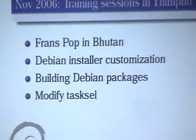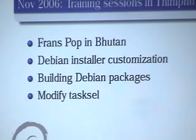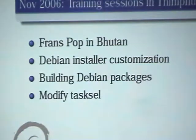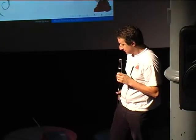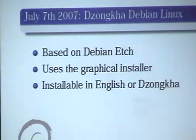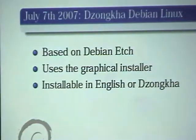After some talks during the launch, training sessions happened in Thimphu, the capital city. Frans Pop was invited to stay for two weeks in Bhutan and give training sessions about D-I customization, tasksel customization, Debian package building, and everything needed to build a customized Debian distribution — the CBD, by the way. They worked to modify tasksel mostly. It was a very successful session. And in a few weeks, on July 7th — it was supposed to happen on June 2nd but was delayed — they will launch Dzongkha Debian Linux.